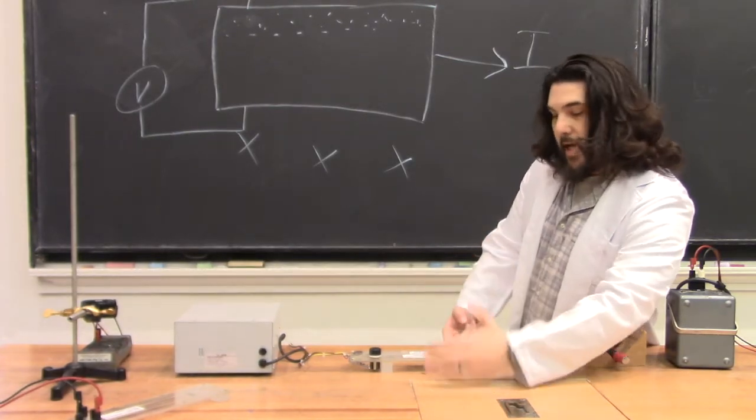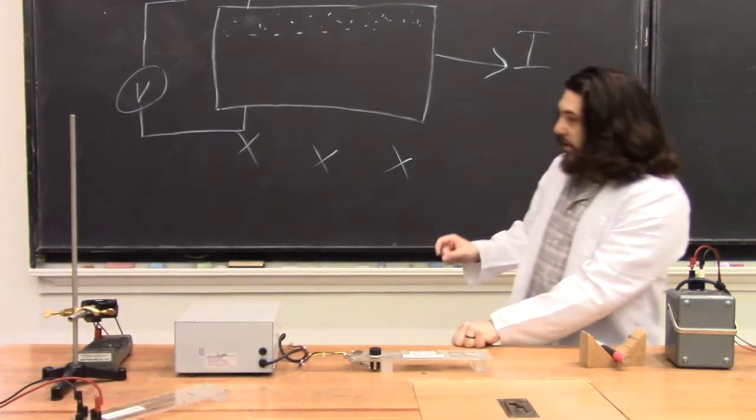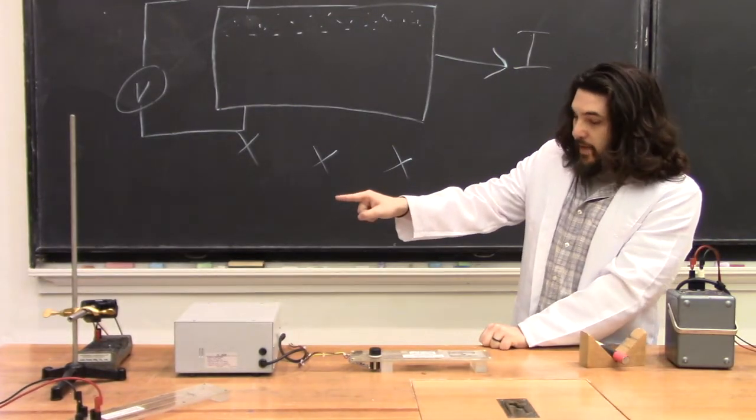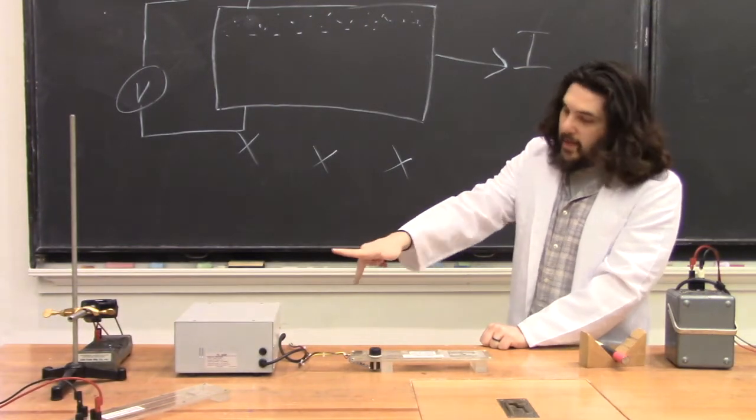For reference, I'll have this side be the positive lead of the voltmeter, and this side be the negative lead. So if the current is flowing that way, and I point a magnetic field down, the charge carriers will pile up on this side.